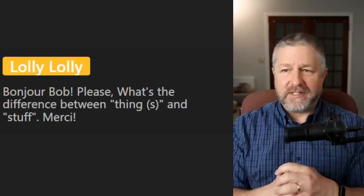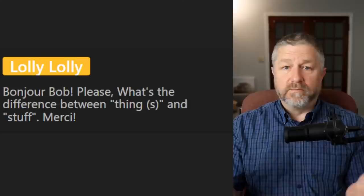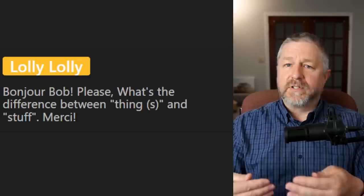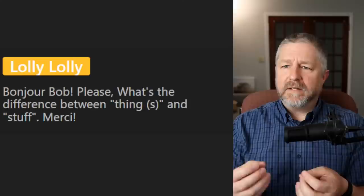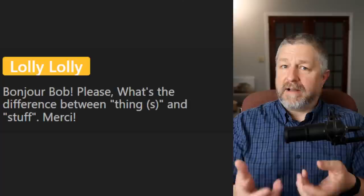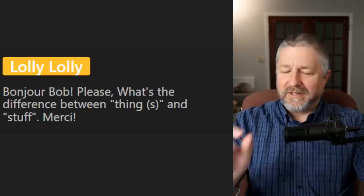Lolly Lolly asks: what's the difference between 'things' and 'stuff'? We often use them as general terms to talk about the things around us. 'There's a lot of things on my kitchen table' or 'there's a lot of stuff on my kitchen table' — they mean the same thing. The grammar is a little different: 'too many things' versus 'too much stuff,' but they're used the same way.